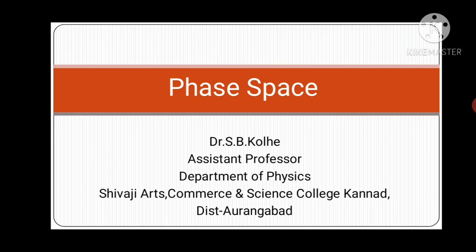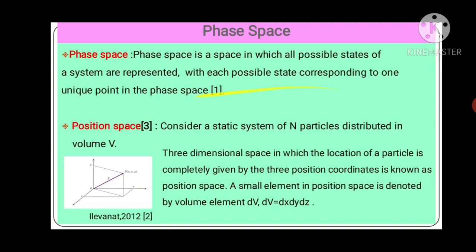Today we will discuss Phase Space. What do you mean by Phase Space? Phase Space is a space in which all possible states of a system are represented, with each possible state corresponding to one unique point in the Phase Space. It also refers to the plotting of both particle's momentum and position in two-dimensional graph.